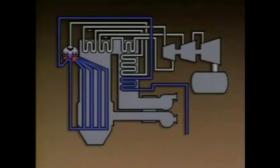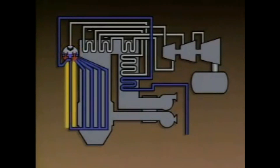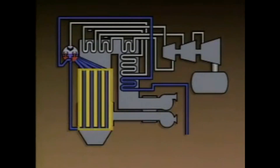The water flow path includes an economizer, the boiler drum, downcomers, headers, and the boiler tubes.